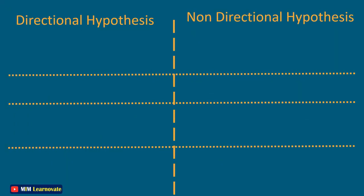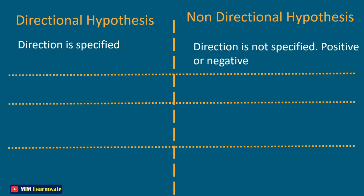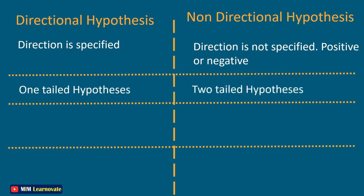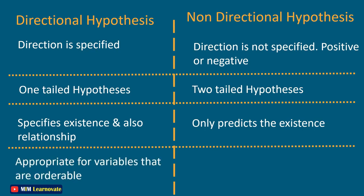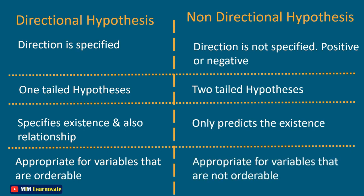The difference between directional and non-directional hypotheses: Directional hypotheses specify the direction, while non-directional hypotheses do not specify direction — whether it is positive or negative. Directional hypotheses are known as one-tailed hypotheses, while non-directional hypotheses are known as two-tailed hypotheses. Directional hypotheses specify both existence and the relationship, while non-directional hypotheses only predict existence. Directional hypotheses are appropriate for variables that are orderable, while non-directional hypotheses are appropriate for variables that are not orderable.